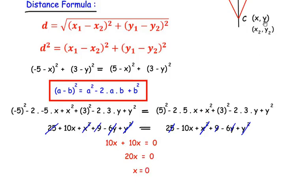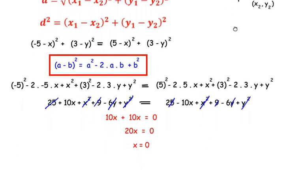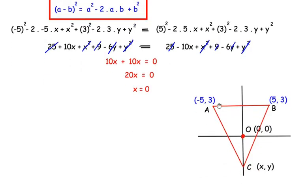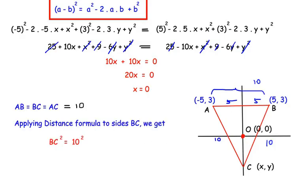Now let us find the y-coordinate. Redrawing the figure for reference: since this is an equilateral triangle, the distance from A(-5, 3) to B(5, 3) is 10 — the distance from A to the y-axis is 5 and from B to the y-axis is also 5, giving a total of 10. Therefore AB = BC = AC = 10.